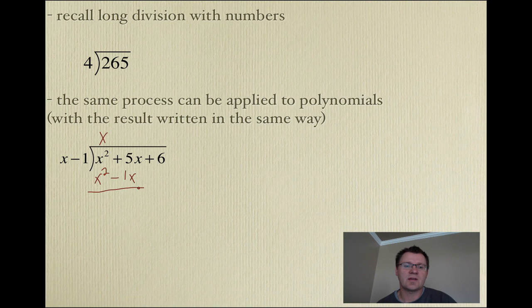Now, I subtract, just like we did before. x squared minus x squared is 0. So, we don't have to write anything there. And we've got 5x minus a negative x. Well, 5x minus a negative x gives us 6x. And if you remember, we pull down the next term, which happens to be a 6.